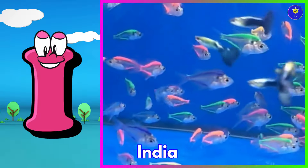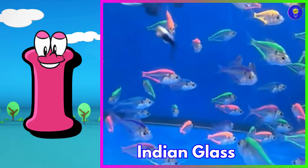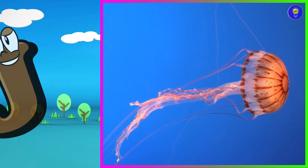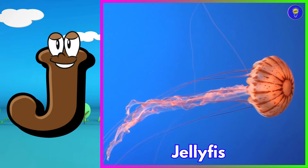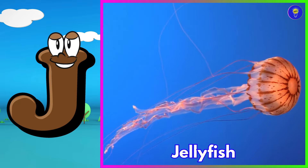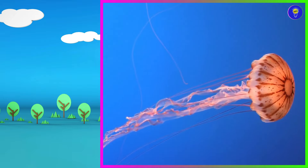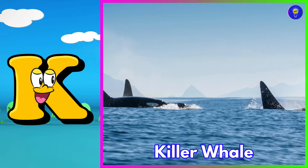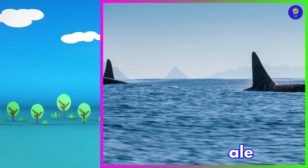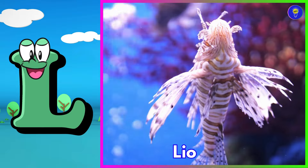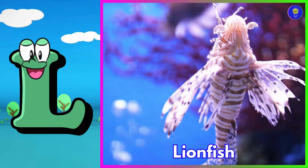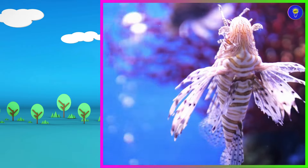I is for Indian glass fish. Eh, Indian glass fish. J is for jellyfish. Juh, jellyfish. K is for killer whale. Kuh, killer whale. L is for lionfish. Luh, lionfish.